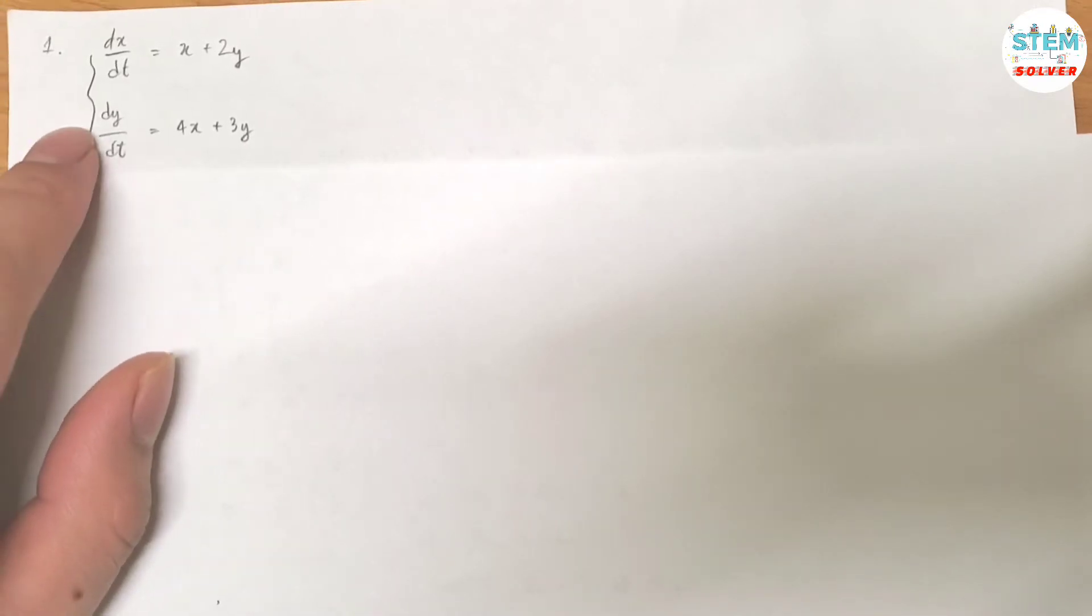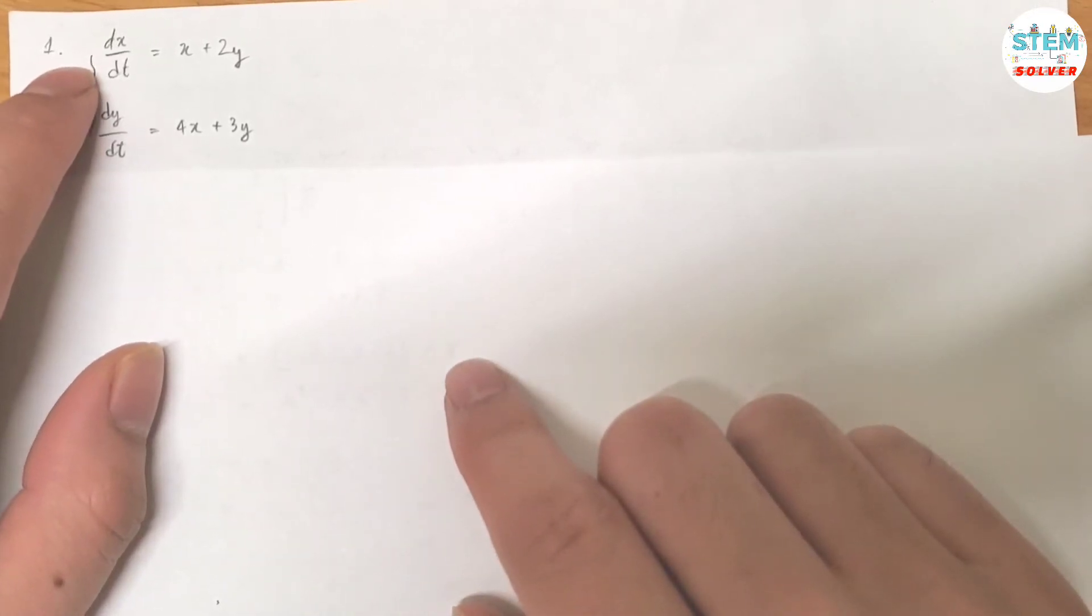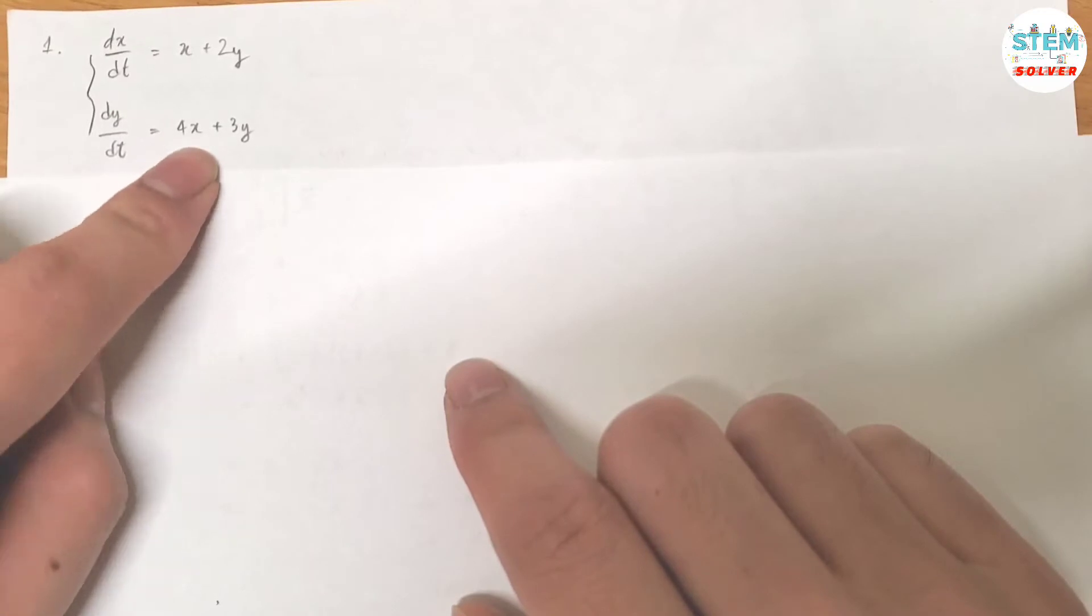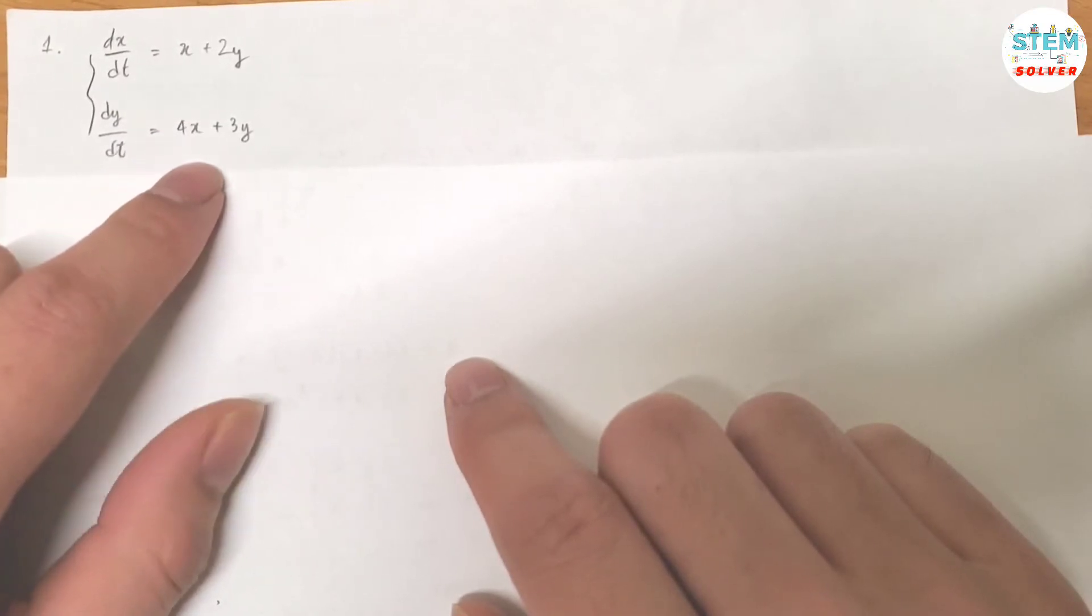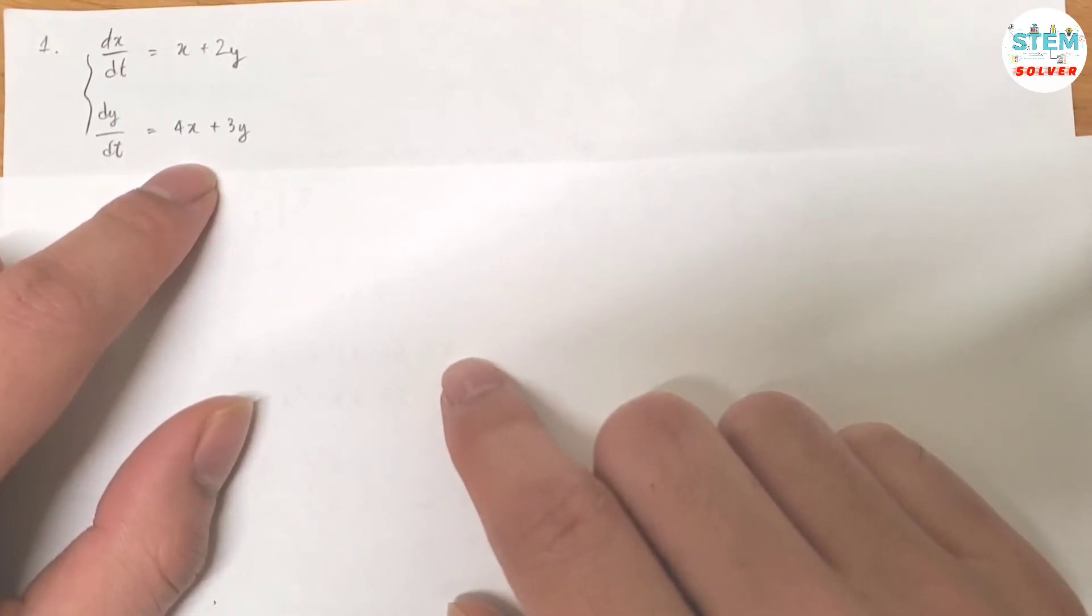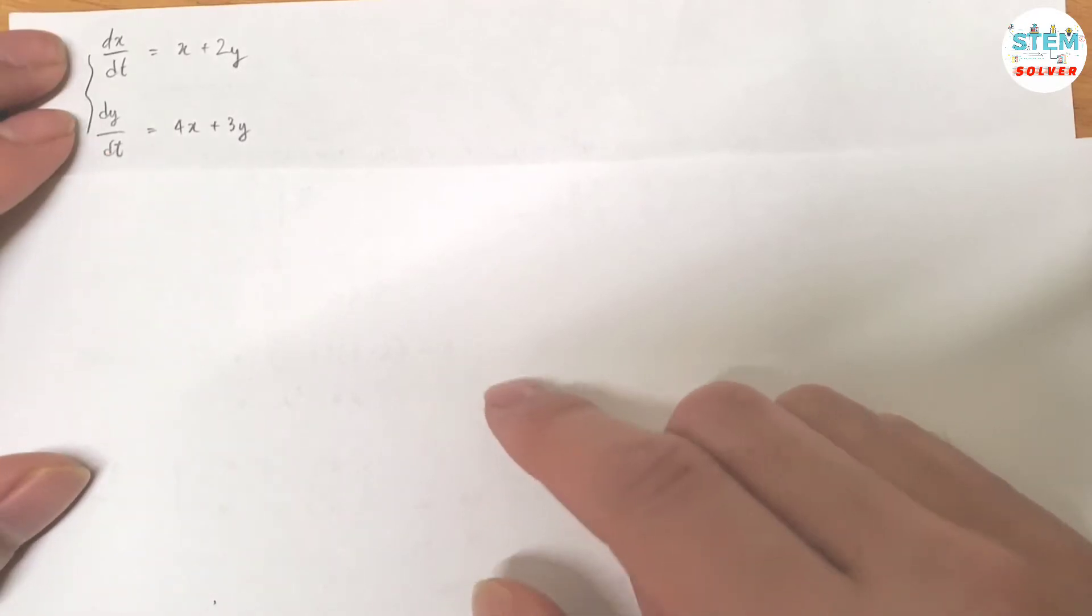Find the general solution of the given system. So here's the system: dx/dt equals this, dy/dt equals this. You are going to use the matrix method to solve this one.